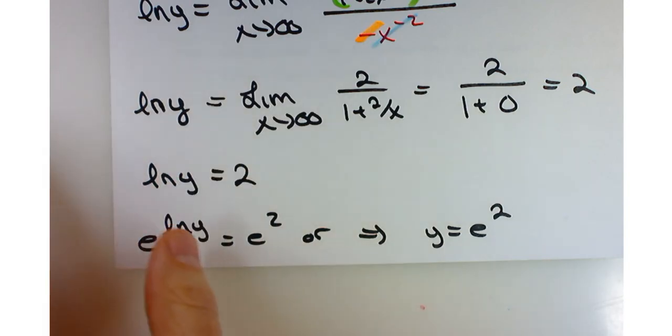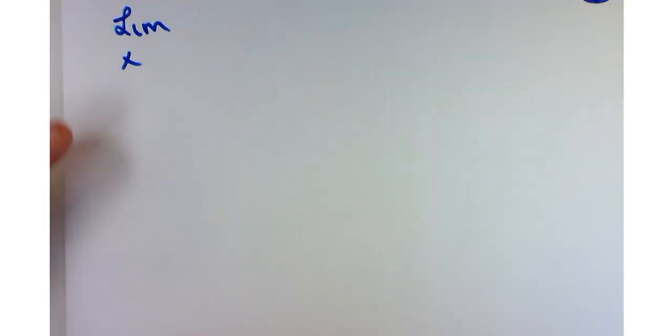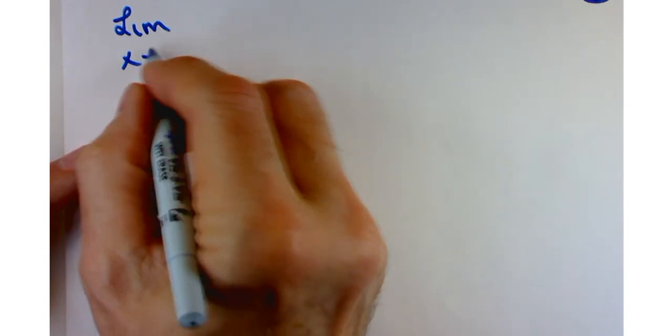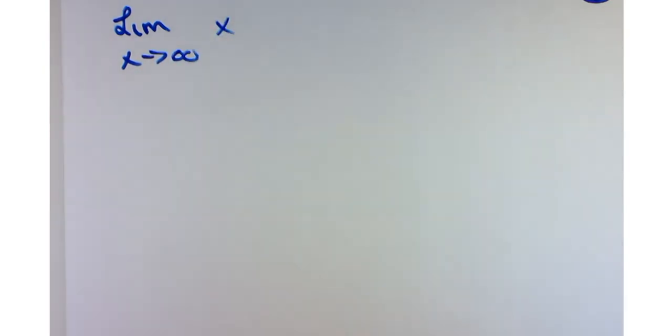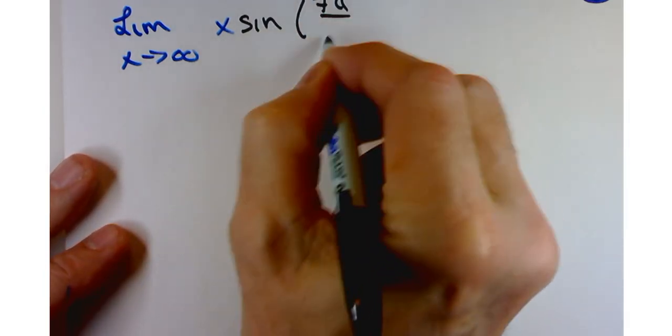Any thoughts or comments on example H? Let's do one more. We've got the limit as x approaches infinity of x times sine of 7π over x.